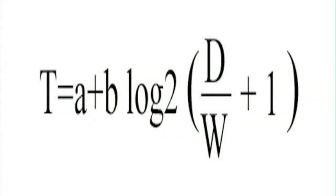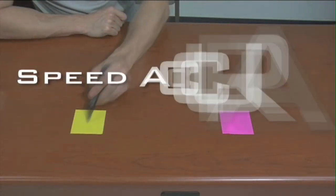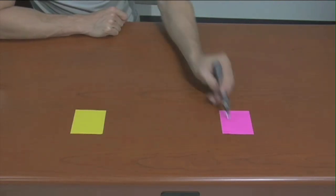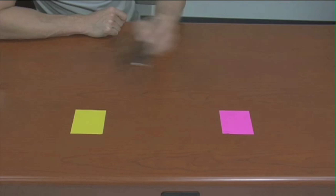Fitts' Law is a mathematical explanation for what we refer to as the speed accuracy tradeoff. The speed accuracy tradeoff essentially says that the faster you move, the more mistakes you will make.